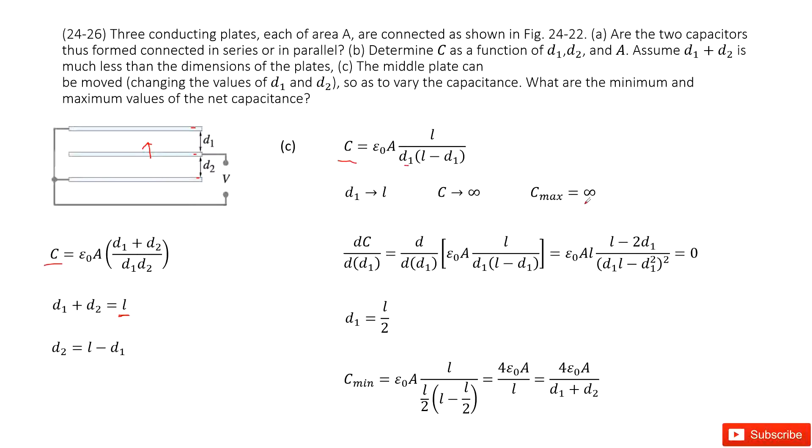To find the minimum for C, we do the derivation. We take dC with dD1 and do this derivation. We get a function like this. If the derivative equals zero, then L equals 2D1, so D1 equals L over 2.